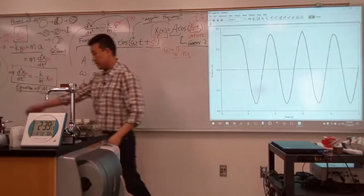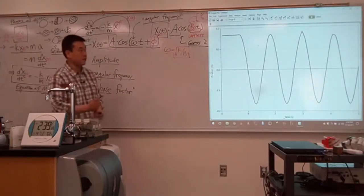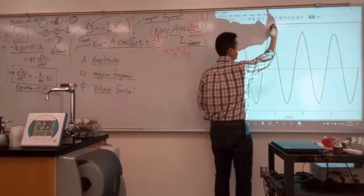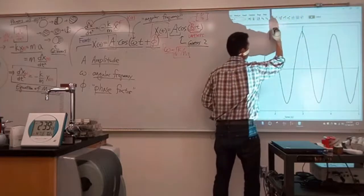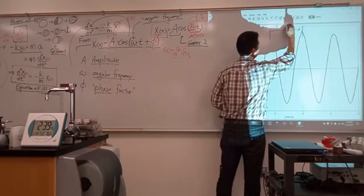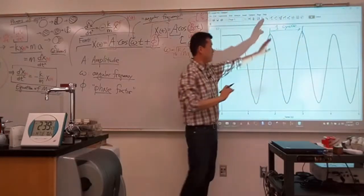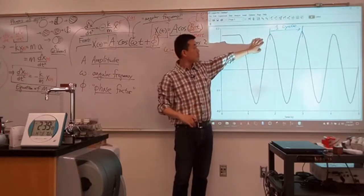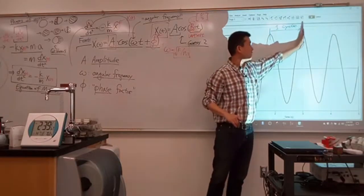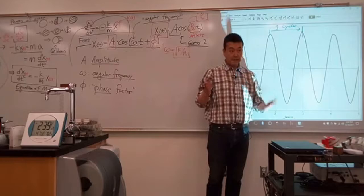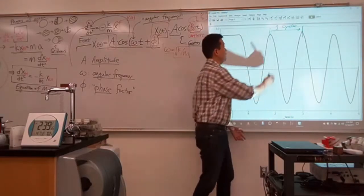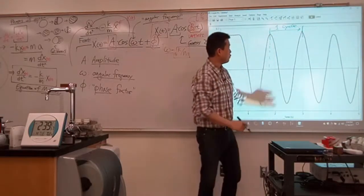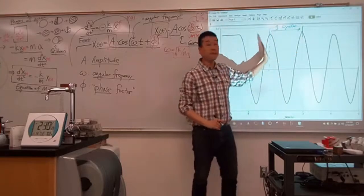So here, one cycle would be, this would be one cycle, right? I just picked the one in the middle. So when we have this one cycle, when we refer to phase here is, which part of this cycle are you referring to?